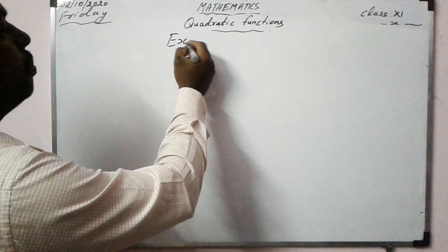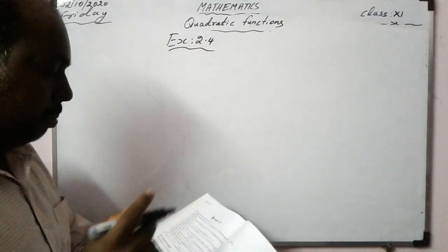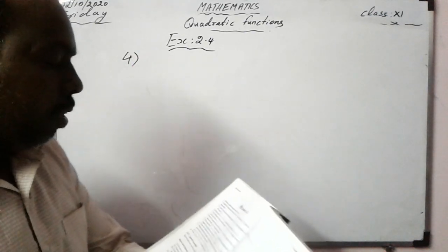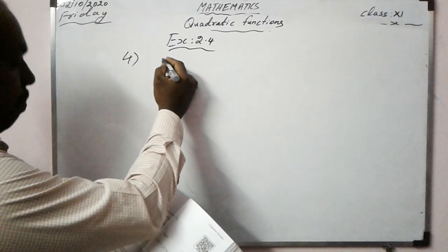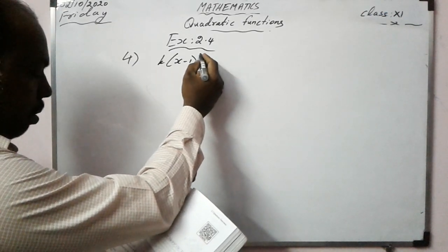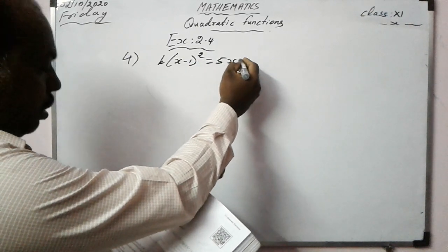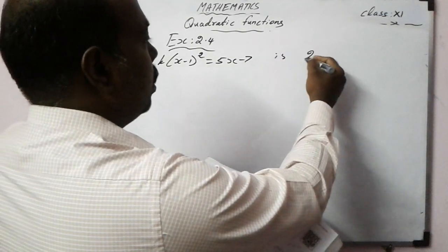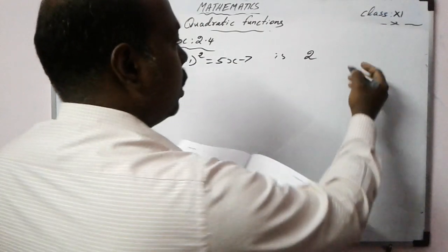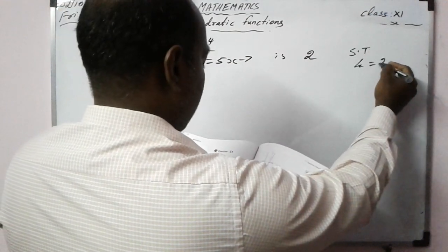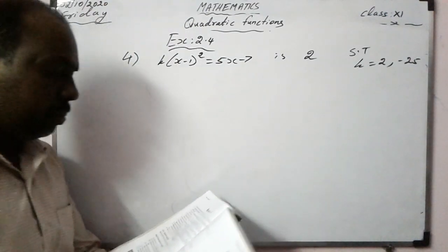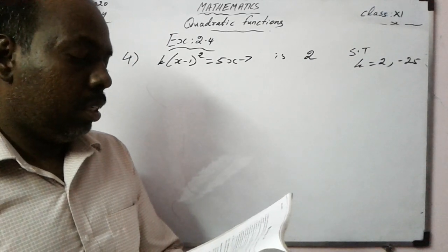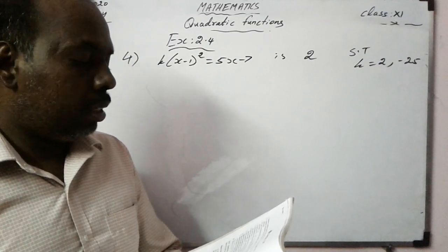This is Exercise 2.4. If one root of k(x-1)² = 5x-7 is double the other root, show that k equals 2 or minus 25.